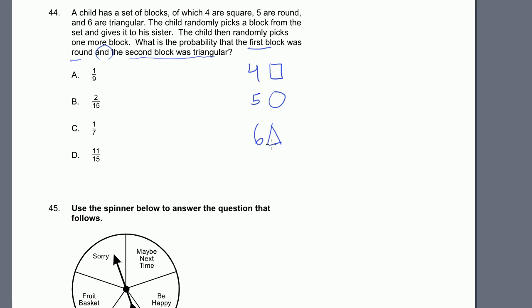So the probability that the first block is round. How many total blocks do we have to start off with? We have 15, right? 4 plus 6 is 10, plus 5 is 15. So we start off with 15 blocks. And what is the probability that the first block is round? Well, five of them are round. So there's a 5 over 15 probability. Now what is the probability that the second block is triangular? Now, remember, we no longer have 15 blocks in the pile. Now he's taken one of the blocks and given it to his sister. So now we're choosing out of 14 blocks.